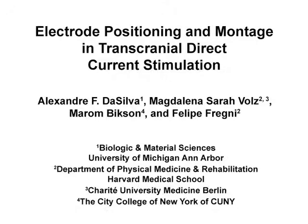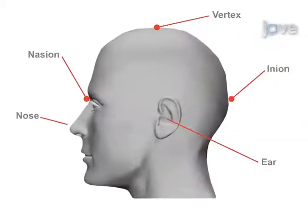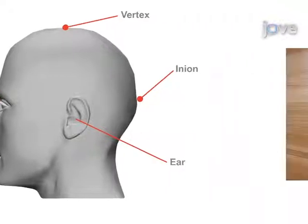The purpose of this video is to demonstrate the technique for administering a session of tDCS using primary motor cortex stimulation as an example. This is accomplished by first measuring the subject's head and marking the sites of stimulation.